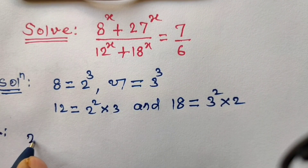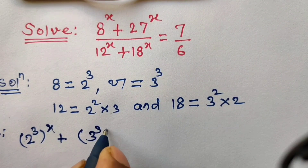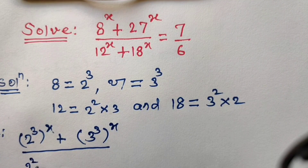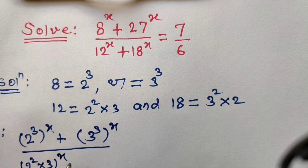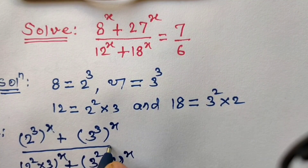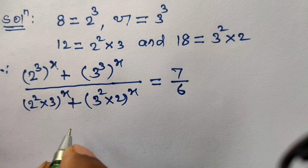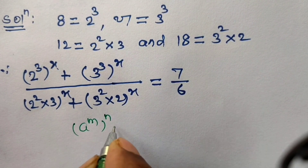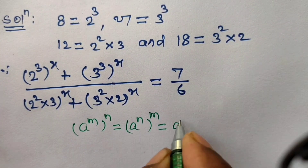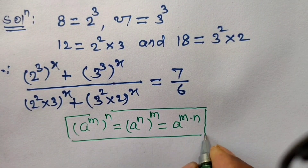Hence, the given equation can be written as: 8 is replaced by 2 cubed with power x, plus 27 is replaced by 3 cubed with power x, divided by 12 replaced by 2 squared into 3 with power x, plus 18 replaced by 3 squared into 2 with power x. This equals 7 upon 6. Now we apply the law of indices: a to the power m to the power n equals a to the power m into n.